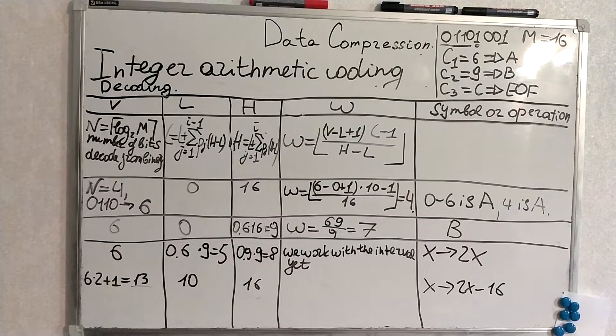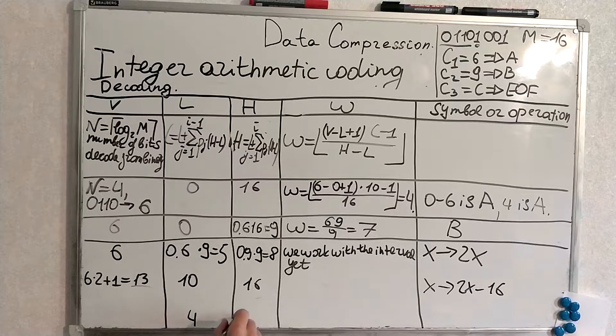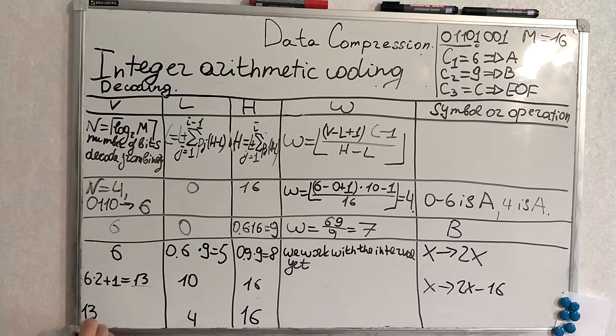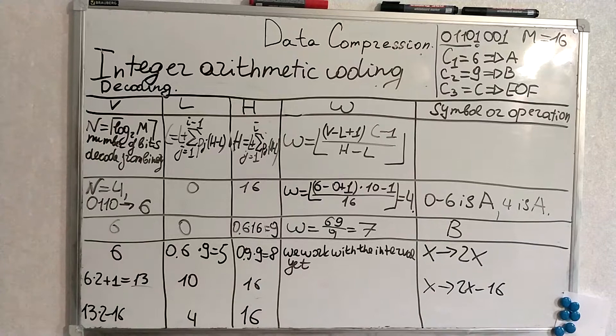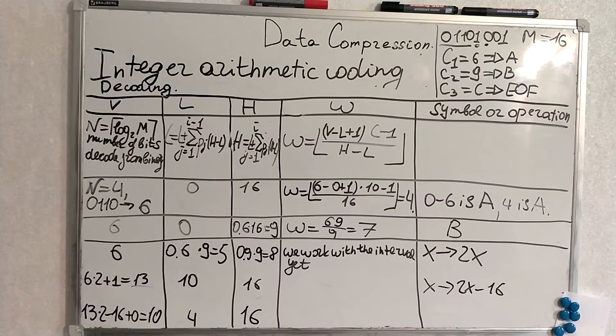So when u interval will be 4 16 right and we also have to work with v 13 multiplied by 2 minus 16 the same as here plus the next bit the next bit is 0 right and it will become 10. I will clean up a little bit because we have run out of space we have prepared our interval for future works with him and we will now decode next symbol and we will now decode next symbol.